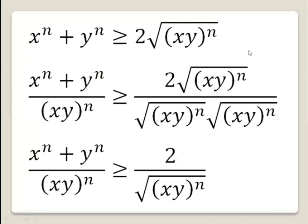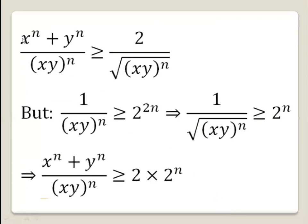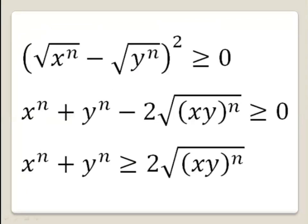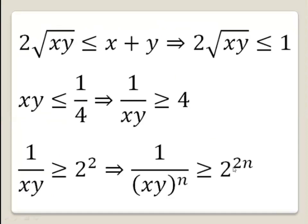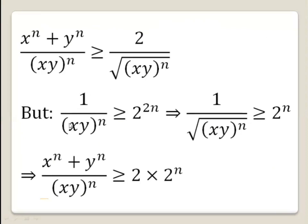Dividing through, we get (xⁿ + yⁿ)/(xy)ⁿ ≥ 2/√((xy)ⁿ). But we proved that 1/(xy)ⁿ ≥ 2²ⁿ. Taking the square root of both sides gives 1/√((xy)ⁿ) ≥ 2ⁿ. Therefore (xⁿ + yⁿ)/(xy)ⁿ ≥ 2 · 2ⁿ.